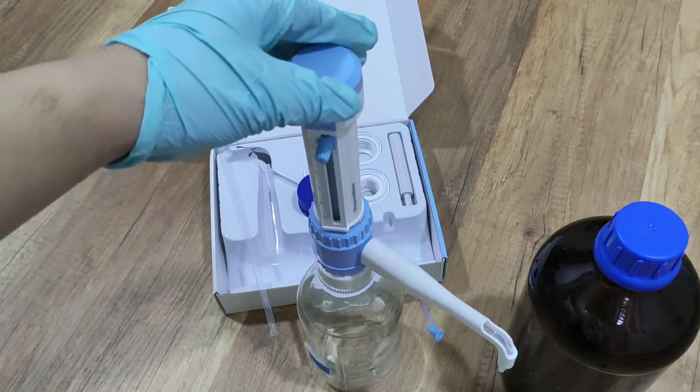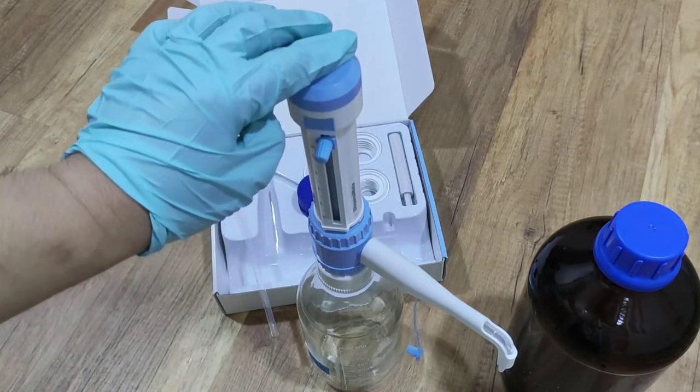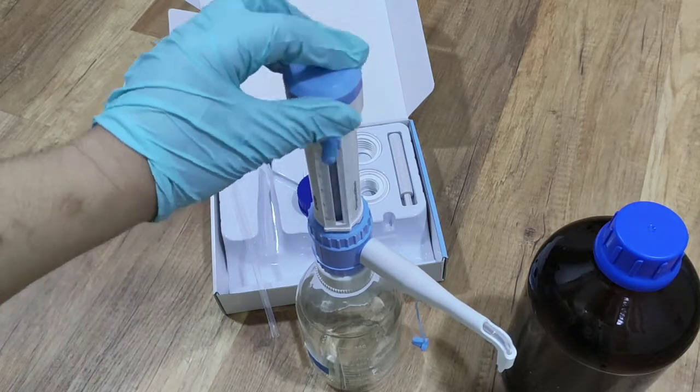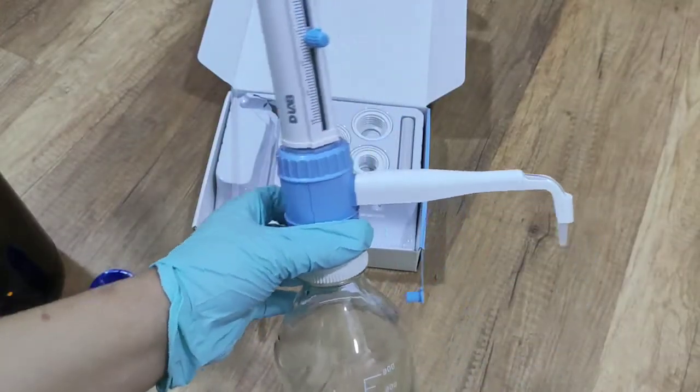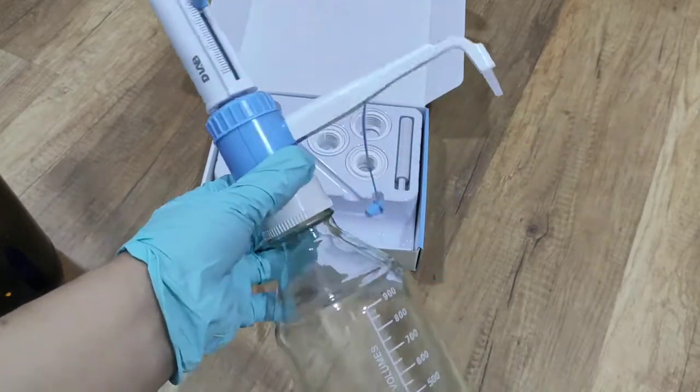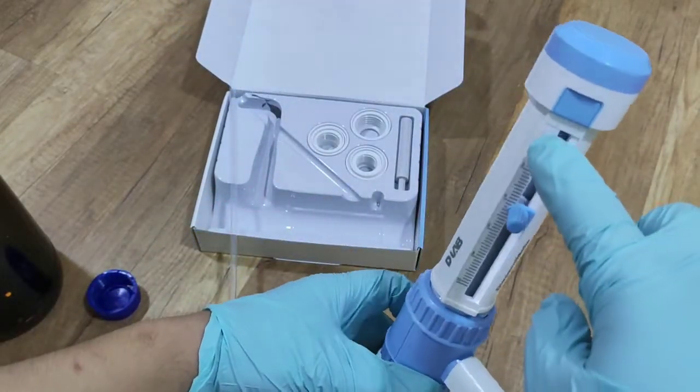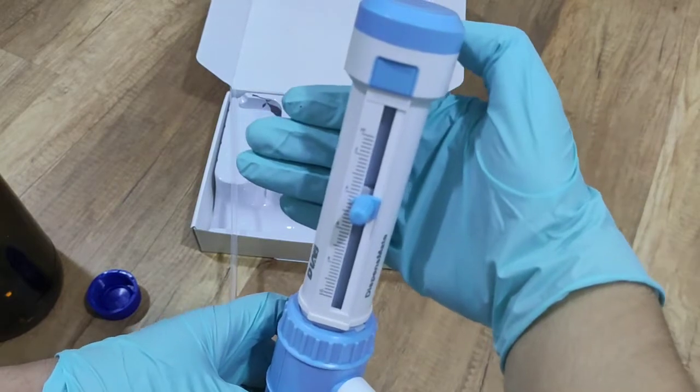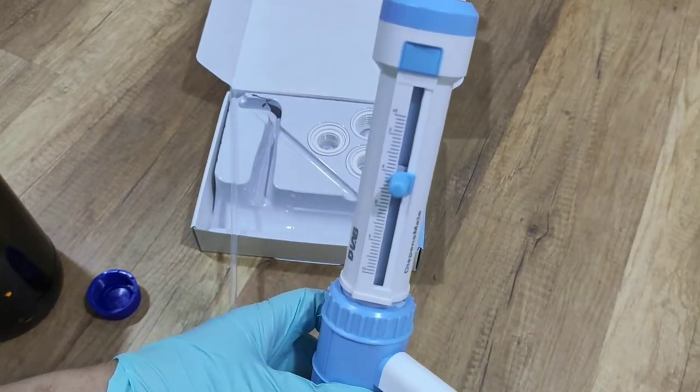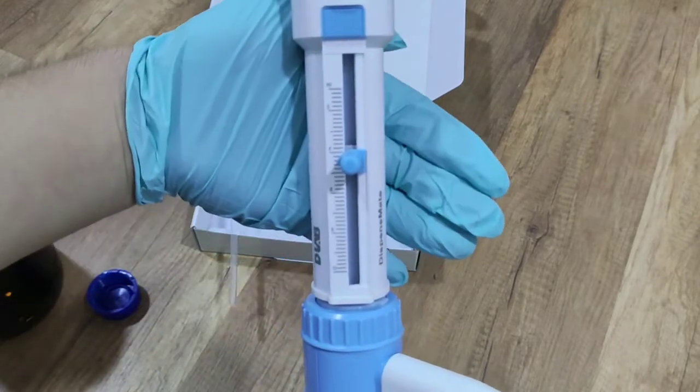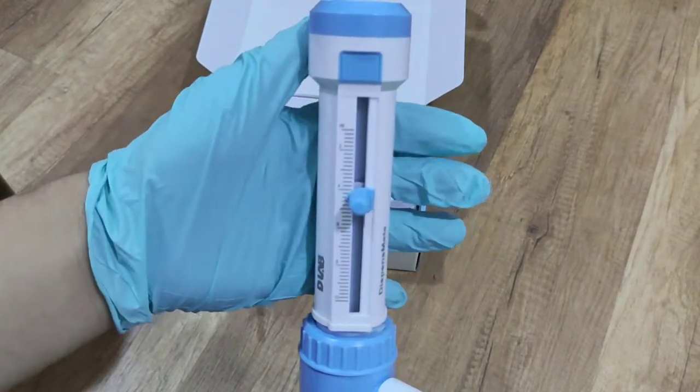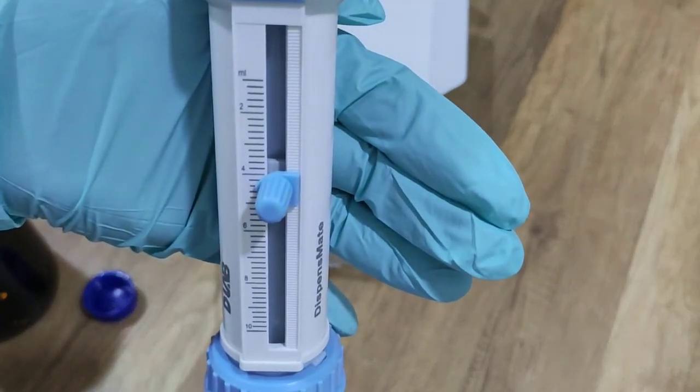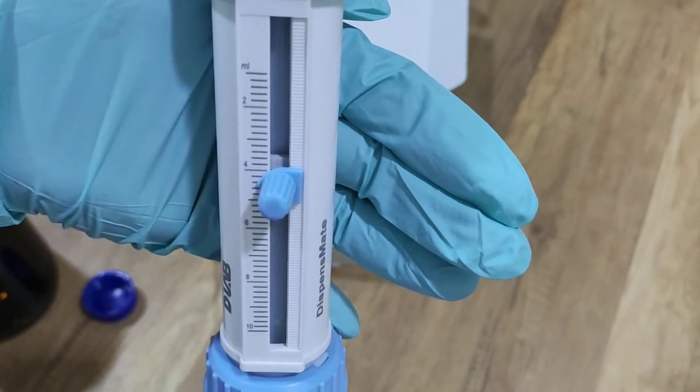And from here, we can try to set up the volume that we want. Now I'm going to show you how to use it. This is the bottle, the dispenser. And from here, we can see the volume. You can see it. I'll make it clear. You can see it. 1 ml, 2 ml, 4 ml, 6 ml, 8 ml, and 10 ml.